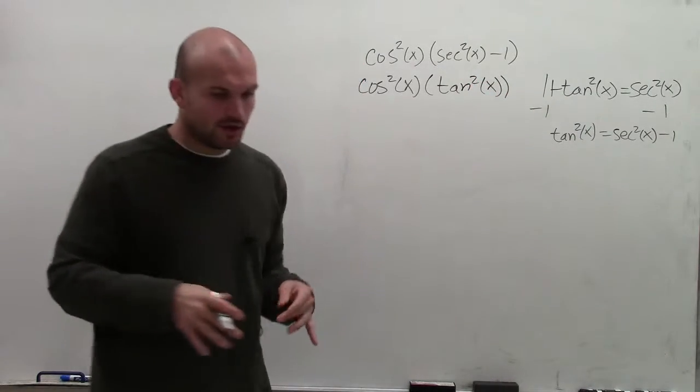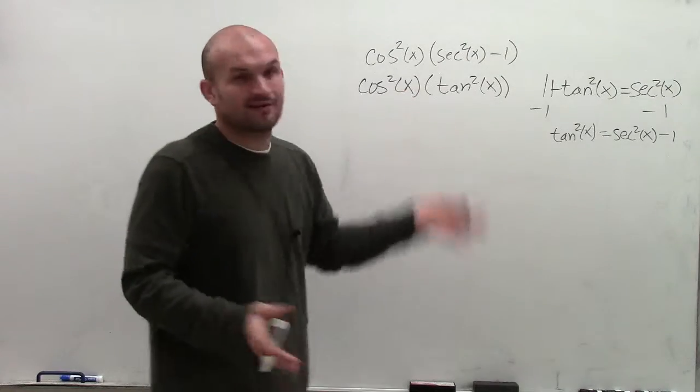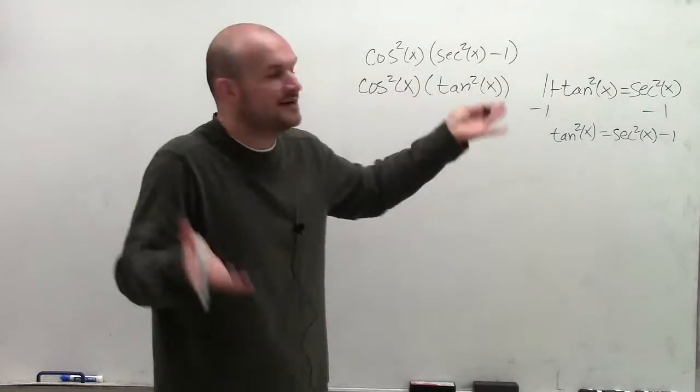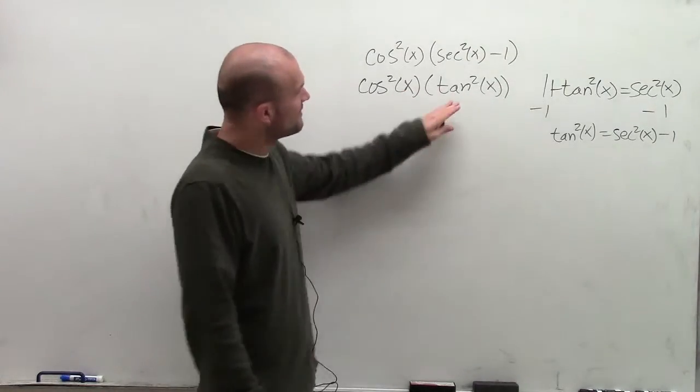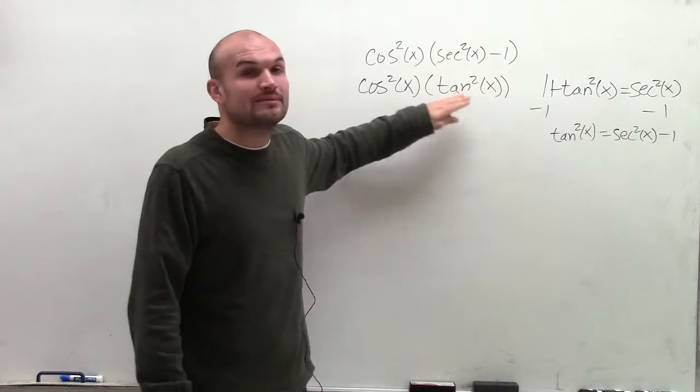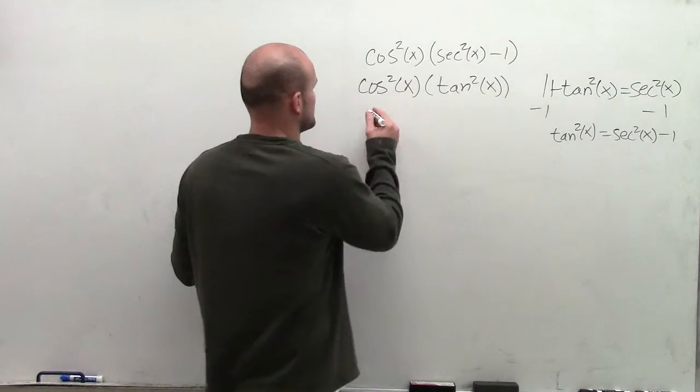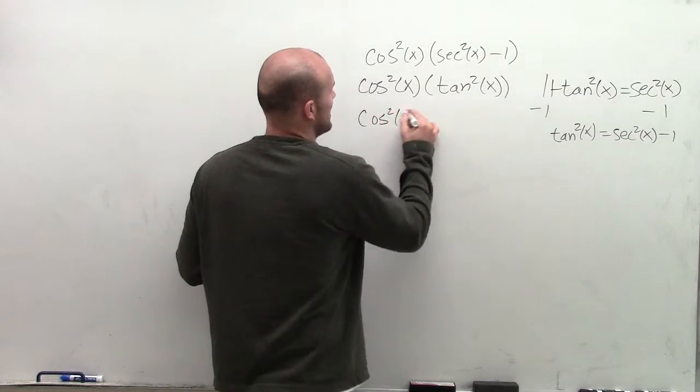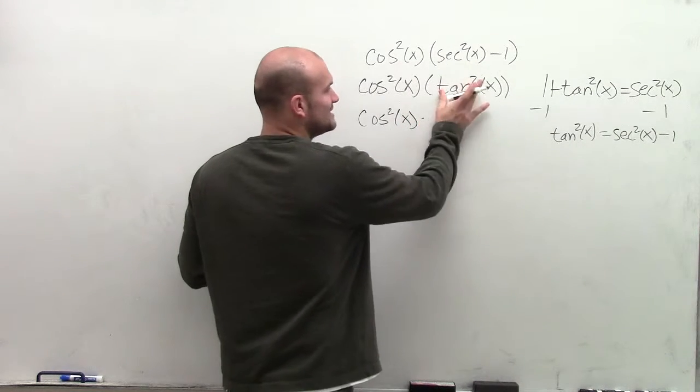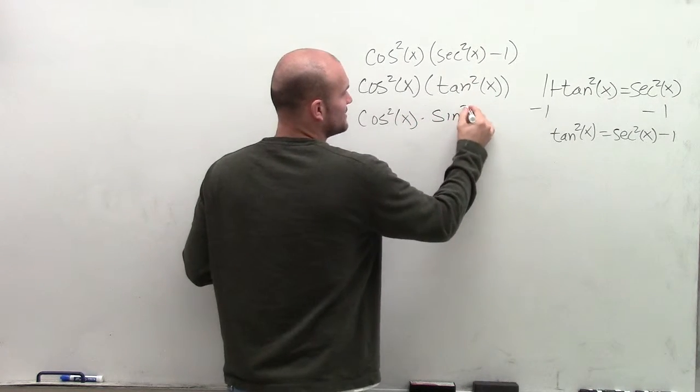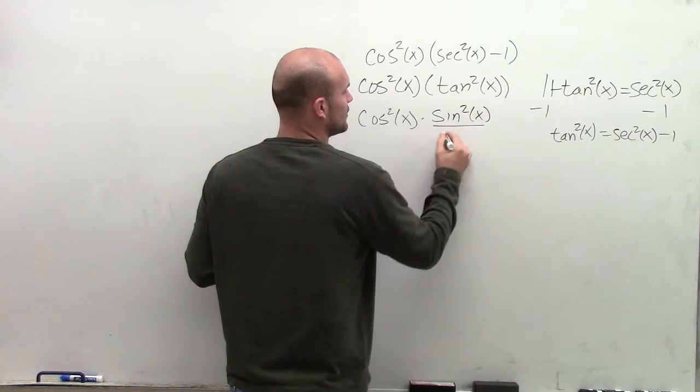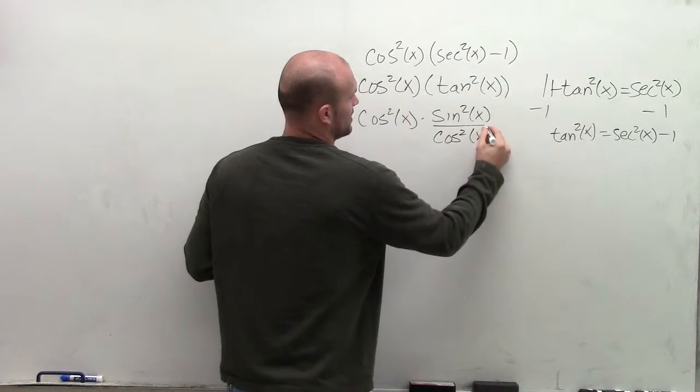So now to get to this point, I still can't really simplify anything, right? It's still this cosine squared times tangent squared. However, I can use the quotient identity to now rewrite what the tangent is. So I have cosine squared of x times the tangent squared of x. That can be written as the sine squared of x over the cosine squared of x.